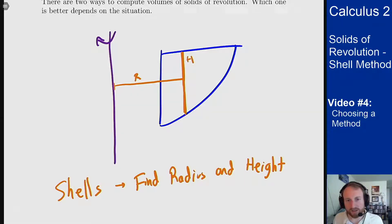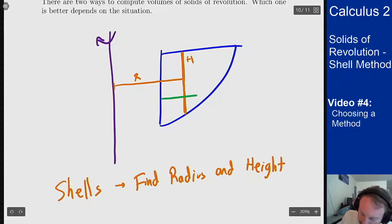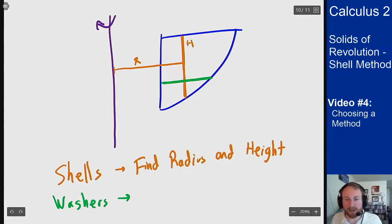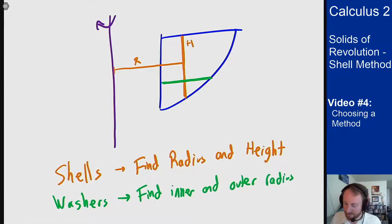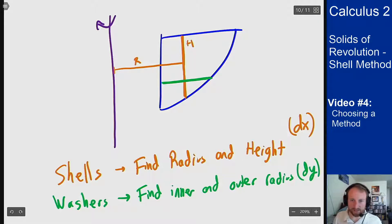If you wanted to use washers you're rotating a horizontal segment around this line, something like this, and to figure that out I need to find the inner and outer radius of this washer. In addition in this case the shells will be a dx integral and the washers will be a dy integral because of how it all gets set up.